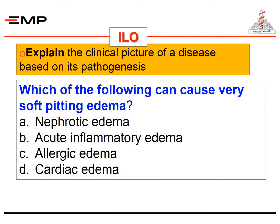Here is another example of a knowledge application question. If your learning outcome is to explain the clinical picture of a disease based on its pathogenesis, and knowing that the degree of edema pitting depends on the protein content of the interstitial fluid, students can apply this knowledge to predict which of the following can cause very soft pitting edema: nephrotic edema, acute inflammatory edema, allergic edema, or cardiac edema. The correct answer is nephrotic edema. This question targets application of knowledge — a higher order of knowledge.